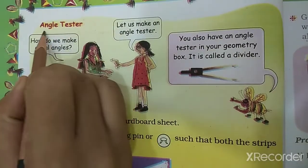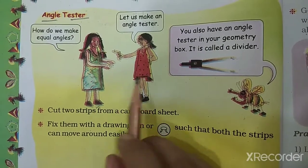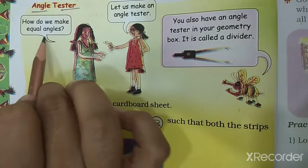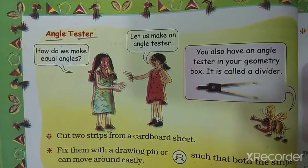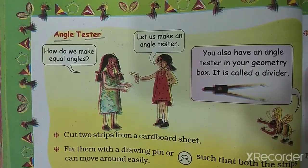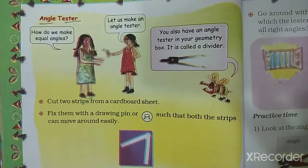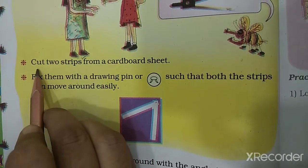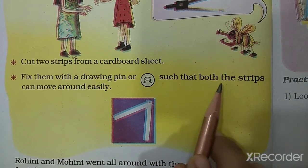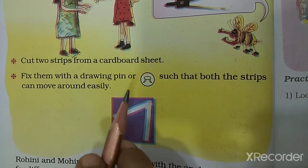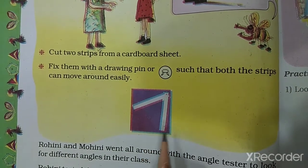Now the second topic is angle tester. Here are two girls, Rohini and Shela. Rohini यहाँ पर क्या बोल रही है? How do we make equal angles? Then Shela is replying, let us make an angle tester. You also have an angle tester in your geometry box — it is called a divider. We have many tools in our geometry box. Here, cut two strips from a cardboard sheet. Fix them with a drawing pin such that both the strips can move around easily.